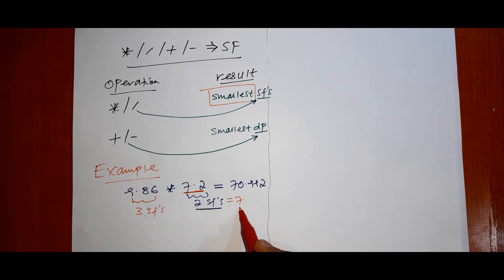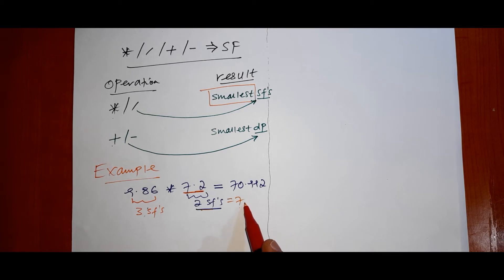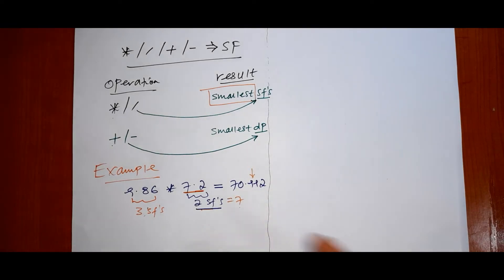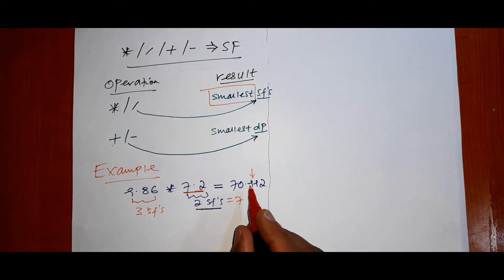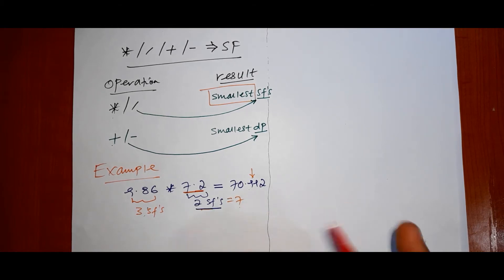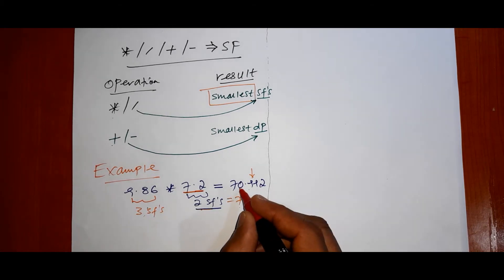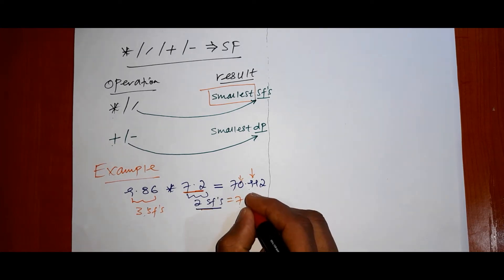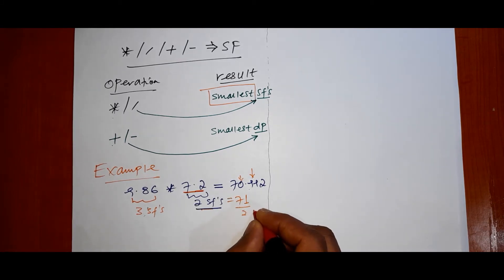Looking at 70.992, we keep the first two significant digits. The next digit after '70' is 9, which is above five, so we round up. The result becomes 71, which has two significant figures.